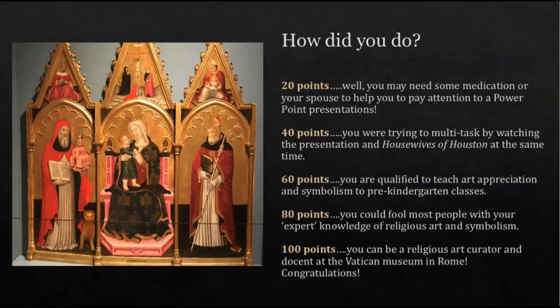So how did you do? Let's see. If you only got 20 points — oh my goodness, you might need your spouse to tell you to pay attention. If you got 40, you're doing better but probably multitasking — maybe watching TV at the same time. If you got 60 points, in the academic world you have minimally passed, and you're now qualified to teach art appreciation symbolism to pre-kindergarten. If you got 80 points, you could probably fool most people into thinking you're an expert in religious art and symbolism. But if you got 100 points and got them all correct — congratulations, you could be an art curator or docent at the Vatican Museum in Rome.